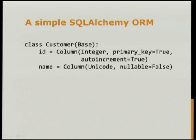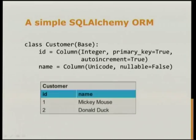For our example migration today, we're going to start with a simple ORM. It's got one table, two columns: an ID and a name. Our table has some test data in it — first customer is Mickey Mouse, the second customer is Donald Duck.